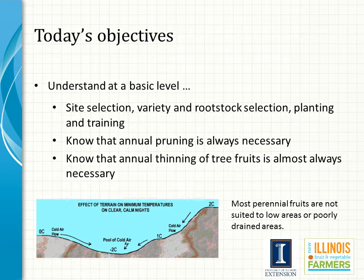This module is designed to cover the basics of fruit production, including the components for good site selection, the selection of cultivar and rootstocks, the steps in the planting process, the importance of training and pruning, and finally crop load management, which is also simply referred to as thinning.